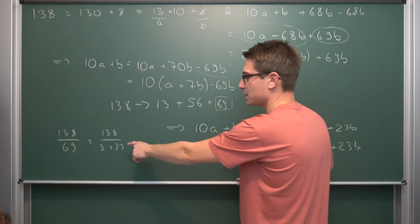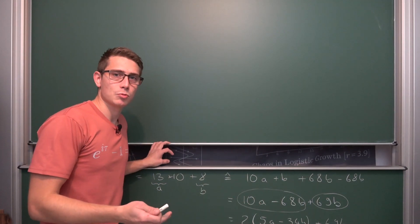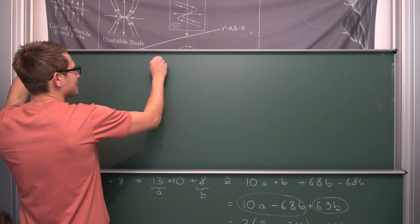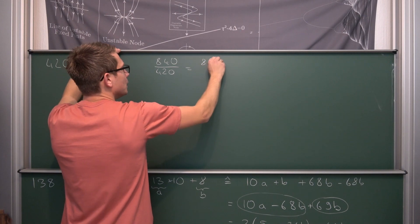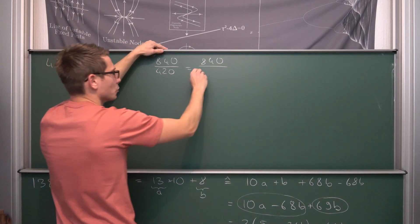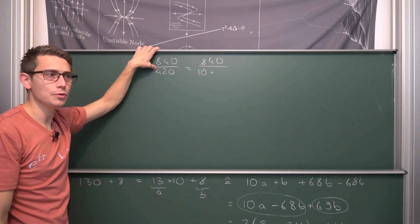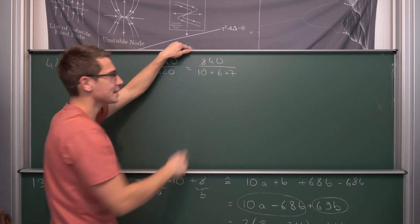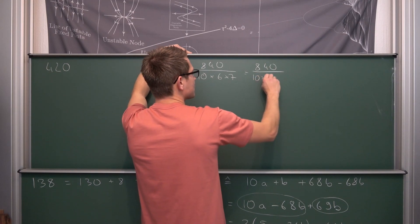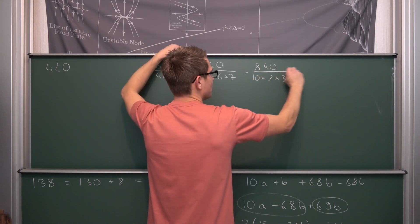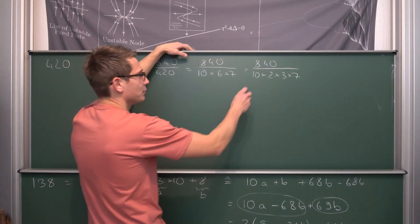But we can go the same route as before and take a look at the factorization in terms of numbers whose divisibility rules we already know. 420 is obviously divisible by 10 because it has a 0, and we know divisibility by 10 is very easy to verify. Then we are going to get 42, and 42 is 6 times 7, and 6 as its prime factorization is 2 times 3. Meaning 420 equals 10 times 2 times 3 times 7. So to verify if a number is divisible by 420, we need to check if it's an even number.